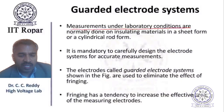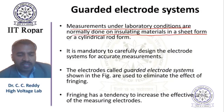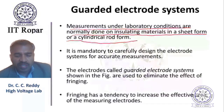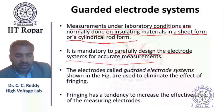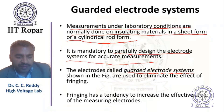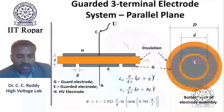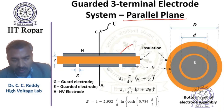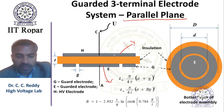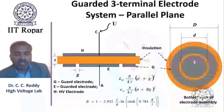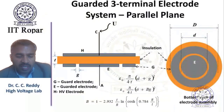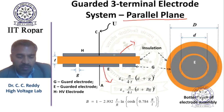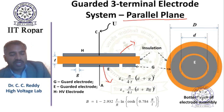Measurements under laboratory conditions are normally done on insulating materials in sheet form or cylindrical rod form. It is mandatory to carefully design the electrode systems for accurate measurements. Guarded electrode systems are used to address the effect of fringing, which has a tendency to increase capacitance. For this purpose, guarded three-terminal electrode systems are used, including the plane parallel electrode system with parallel plane electrodes.